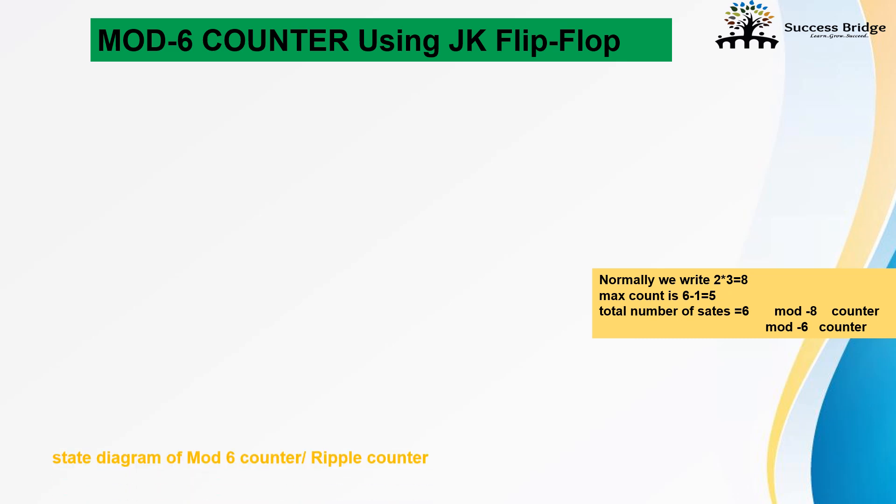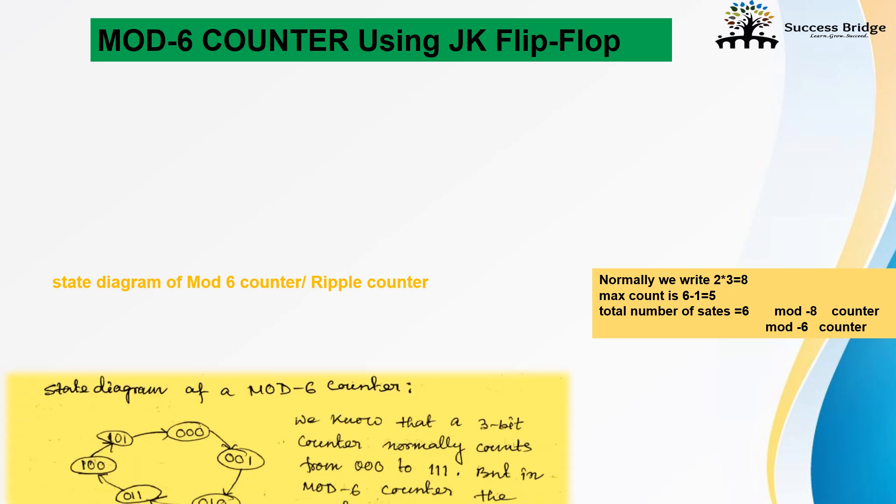First step is to draw the state diagram. This is the state diagram of mod 6 counter. This is the 3-bit counter. We can write its count up to 0 to triple 1, but for mod 6 counter, the sequence will count up to 0 to 5. To count this 0 to 5, we required a reset signal.